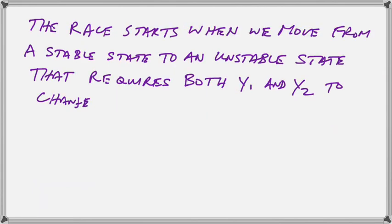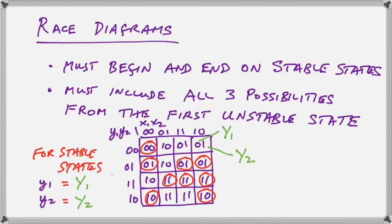The race starts when we move from a stable state to an unstable state that requires both y1 and y2 to change. If you go back, you will see that this occurs in the second row, in the only state in the second row that is not a stable state. You will see that what is in the squares is the opposite of what is in the unstable state in row 2.